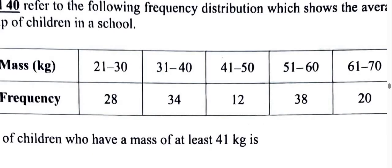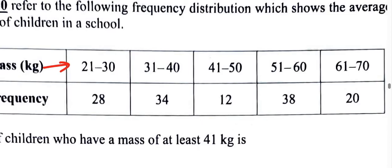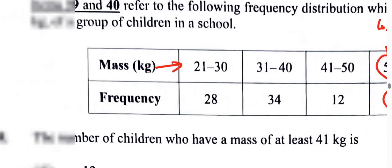These are the classes, and the modal class is the class with the highest frequency. The one with the highest frequency is this class here with 38 children. The lower limit is the lowest number that we're looking at, that's the lower limit. This one could be the upper limit, so it's going to be 51.